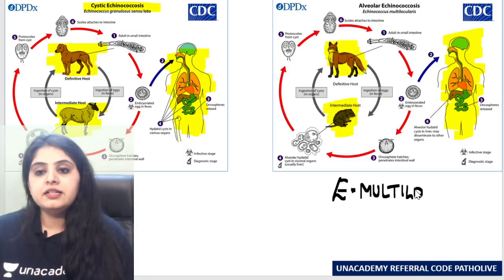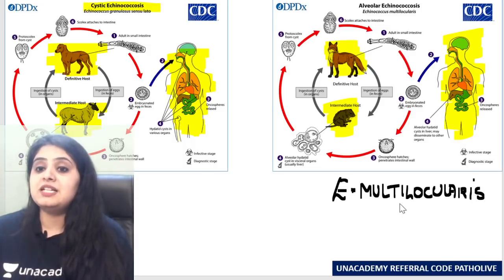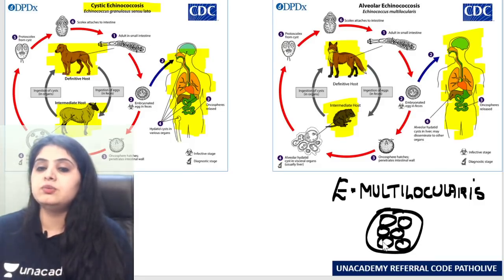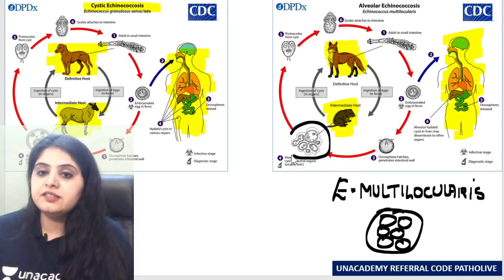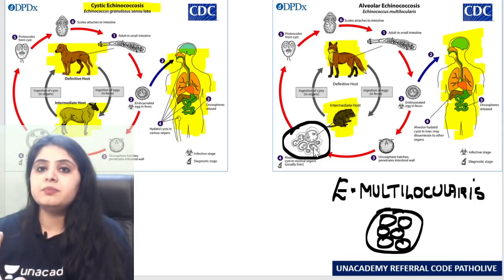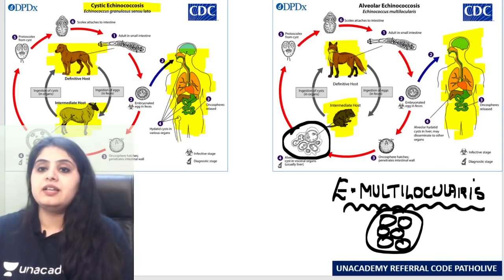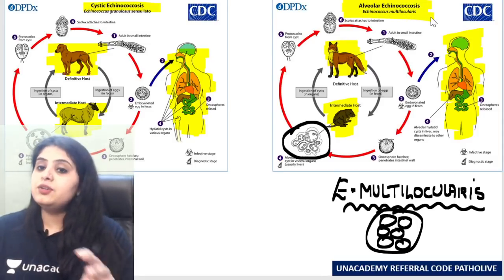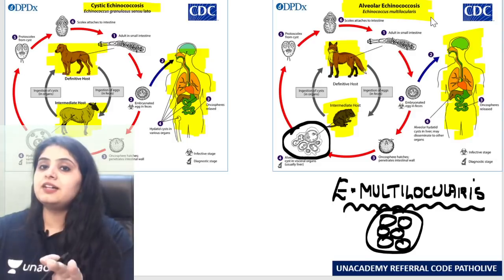Which one is this? This is clearly Echinococcus multilocularis. One more thing that tells me it is multilocularis: the hydatid cyst has multiple locules. Can you see the hydatid cyst? It's called multiple locules — it looks like the alveoli in the lung. So Echinococcus multilocularis is also known as alveolar echinococcus.